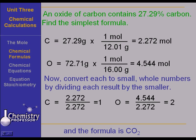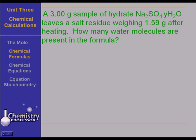Now, that was kind of simple. We need to do one that's a little more interesting. You have a 3-gram sample of the hydrate Na2SO4·YH2O. And I put Y there because we don't know how many water molecules are in it. But we do know that if we take that 3-gram sample of the hydrate and we heat it, that after we have heated it to constant weight, that salt residue is going to weigh 1.59 grams. We want to know how many water molecules are present in the formula.